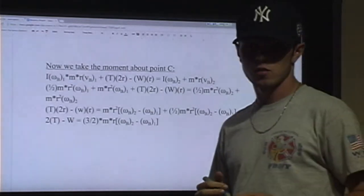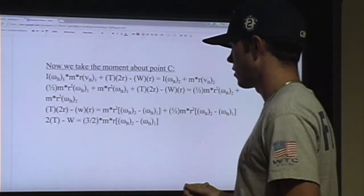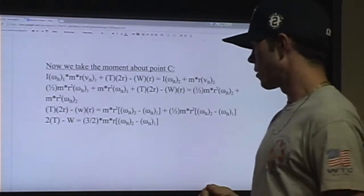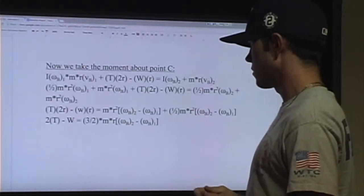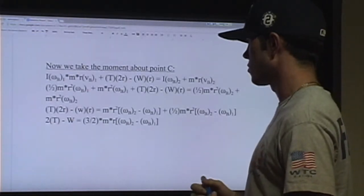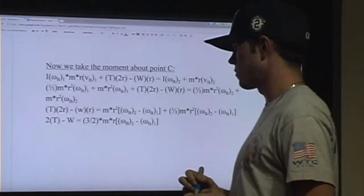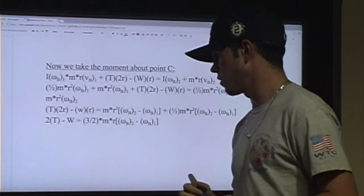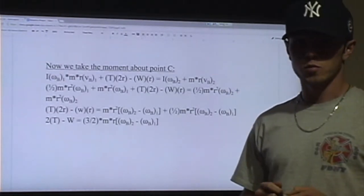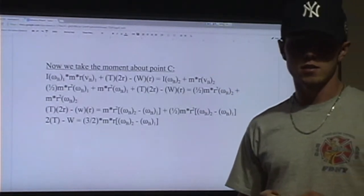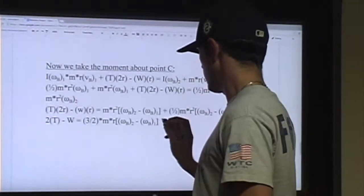After simplification and substituting in all known information, we come up with: 2 times the tension minus the weight equals 3/2 times the mass times the radius times the difference in angular velocities.